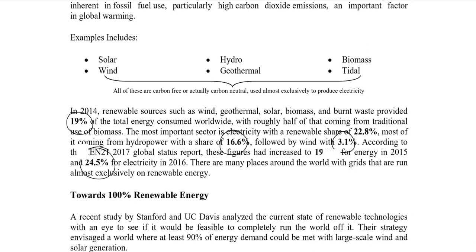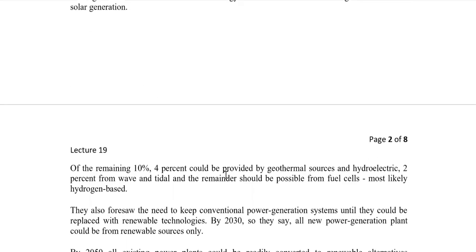There are many places around the world with grids that run almost exclusively on renewable resources. A study at Stanford University and UC Davis analyzed whether we could feasibly run the world entirely on renewables. The study found that almost 90 percent of energy demand could be met with wind and solar generation, with the remaining 10 percent from geothermal at 4 percent, hydroelectric at 2 percent, and tidal and fuel cell sources making up the rest.